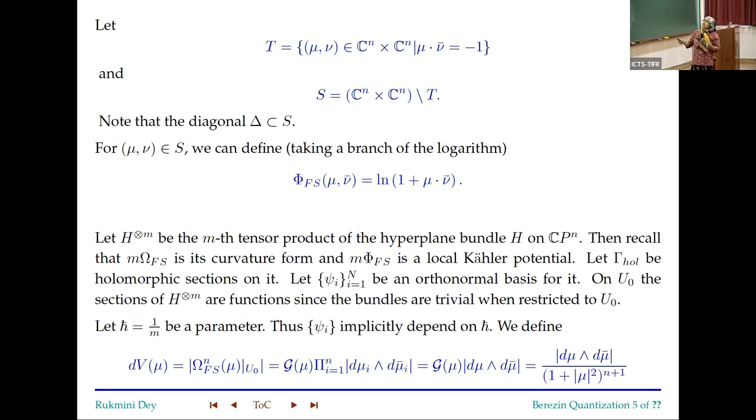So now on this space, you just leave out all those points μ·μ̄ is equal to minus 1. And you can define this thing. Later on we will come to this because this is going to be called our reproducing kernel. So now this is very important, let h-bar is 1 over m be a parameter. m we are going to think of it as an integer and h-bar is 1 over m, m is going to go to infinity as h-bar goes to 0.